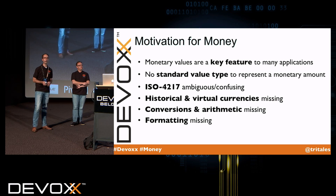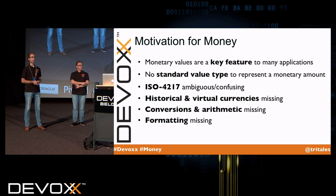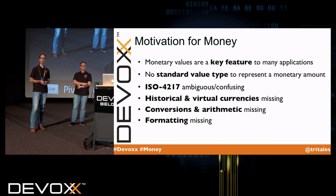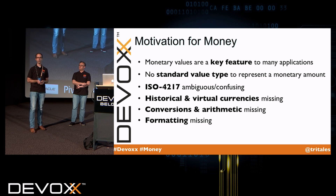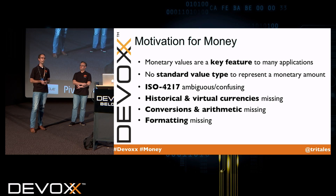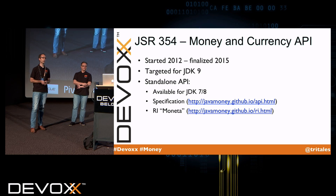So let's summarize the motivation for adding such a Money class. Monetary amount values are a key feature of many applications and there's no standard type at the moment. The ISO 4217 standard has some issues — for example, the Central African Franc is used in two variants in different areas. Furthermore, historical and virtual currencies like Bitcoin are not supported in the JDK. Conversion and arithmetic is missing, and formatting is not provided. This led to the development of JSR 354.